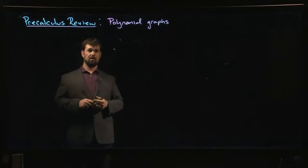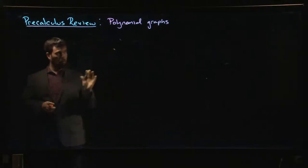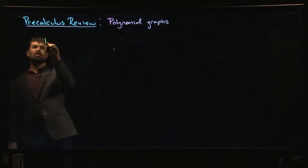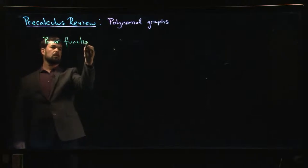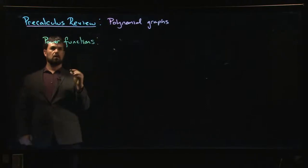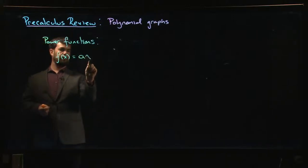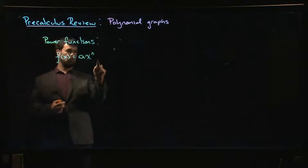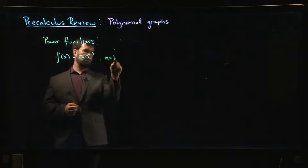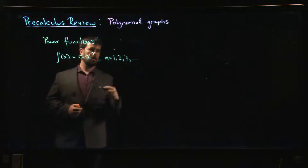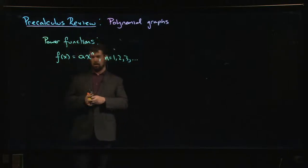Later on when we're doing calculus, there's going to be a fair amount of graphing involved. What do polynomial graphs typically look like? Well, it helps to first think about what power functions look like. So what if I have a function that looks like f of x equals a times x to the n, where n here could be 1, 2, 3, and so on?